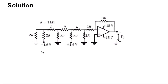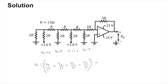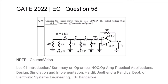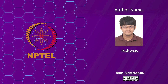Now substituting the given values: v3 = 1.6V, v1 = 1.6V, v2 = 0, v0 = 0. So V_out = −[ 1.6/16 + 0 + 1.6/4 + 0 ] = −[ 0.1 + 0.4 ] = −0.5 volts. The answer is −0.5V.